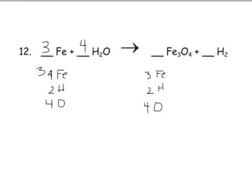That coefficient applies to everything in that formula. And so my hydrogen is now eight on this side. I can easily fix that by putting a coefficient of four in front of the hydrogen, making eight. So three irons, eight hydrogen, four oxygen on each side. That's balanced.